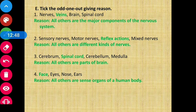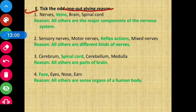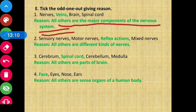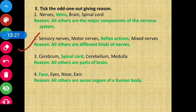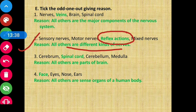Section E: Take the odd one out, giving reasons. Question 1: Nerves, veins, brain, spinal cord — veins is the odd one out because all others are major components of the nervous system. Question 2: Sensory nerves, motor nerves, reflex action, mixed nerves — reflex action is the odd one out because all others are different kinds of nerves.